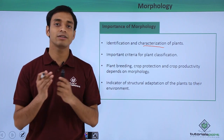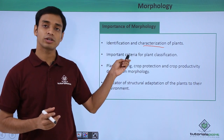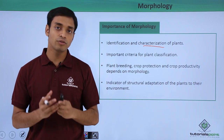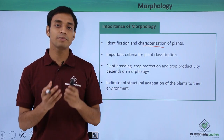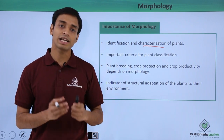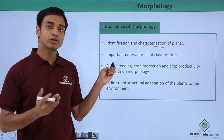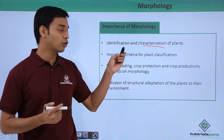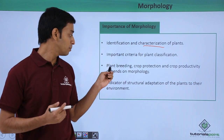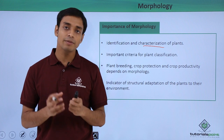These morphological characters have been used to classify plants into various groups, making morphology very important for plant classification. In fact, morphology is used as the first basic step for the classification of plants. In addition, the study of morphology has helped us in plant breeding.